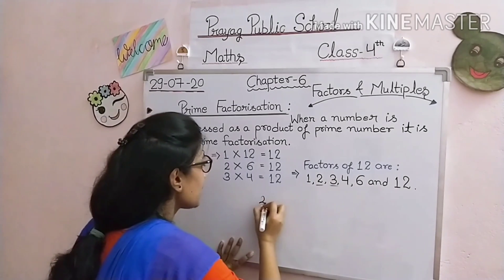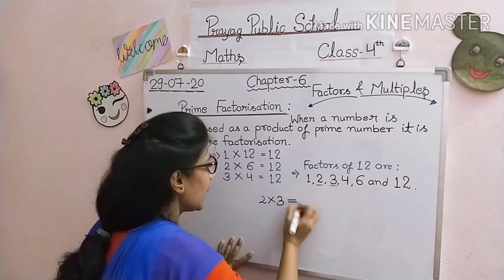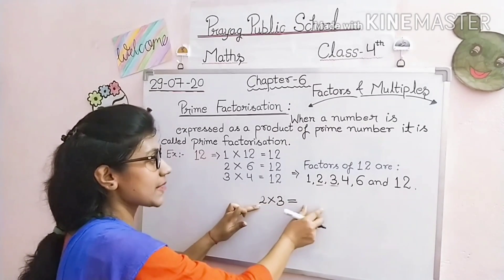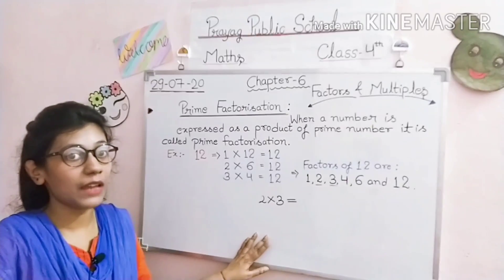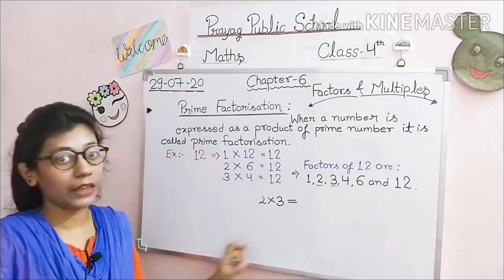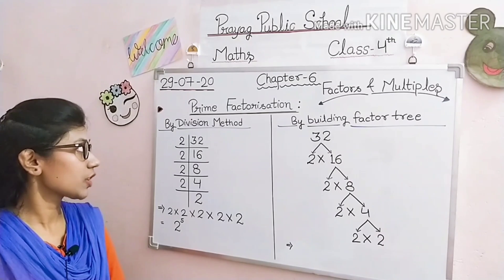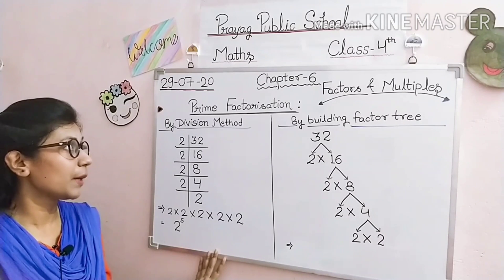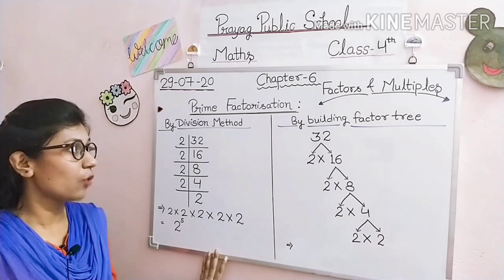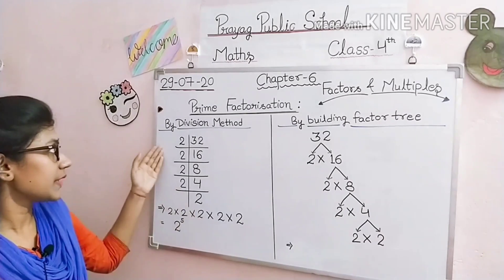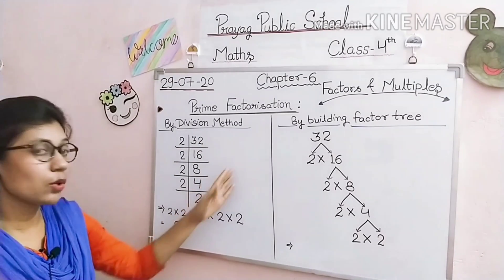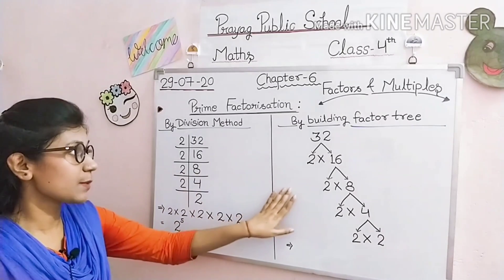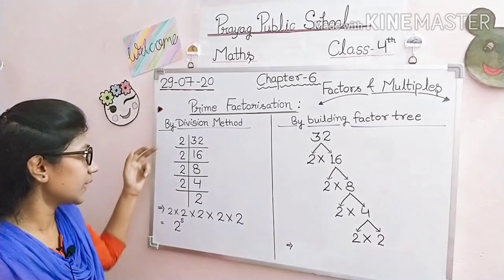तो prime numbers के product के form में 2 multiplied by 3 ऐसा हमें मिलेगा — कोई भी given number को prime numbers के product के form में express करना, वो होता है prime factorization। अब हम देखते हैं prime factorization किसी भी number के कैसे find out करते हैं। दो methods होते हैं — first method is division method, and second is by building factor tree.